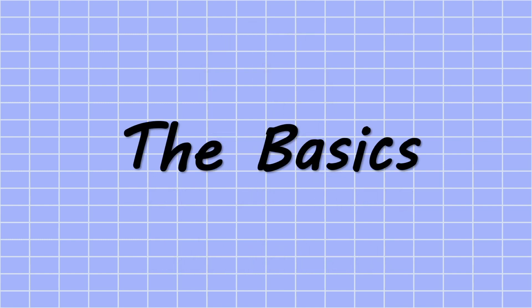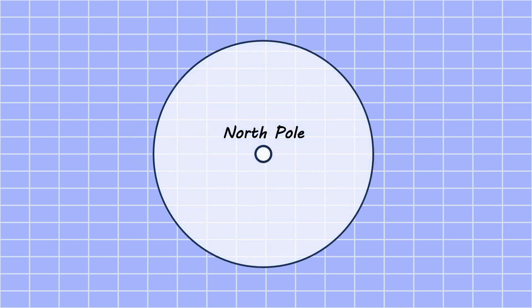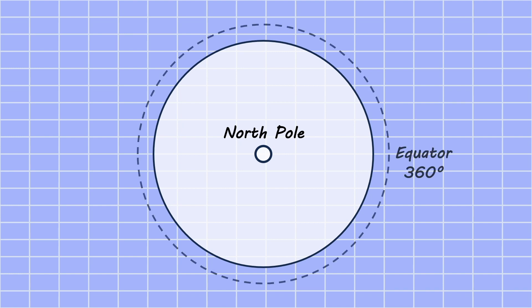To begin, we will start with the basics of longitude and time. If we start from the assumption that the Earth is a perfect sphere and we look down upon it from the North Pole, we can see that the equator of the Earth is a circle and hence the degree value of it is 360 degrees.